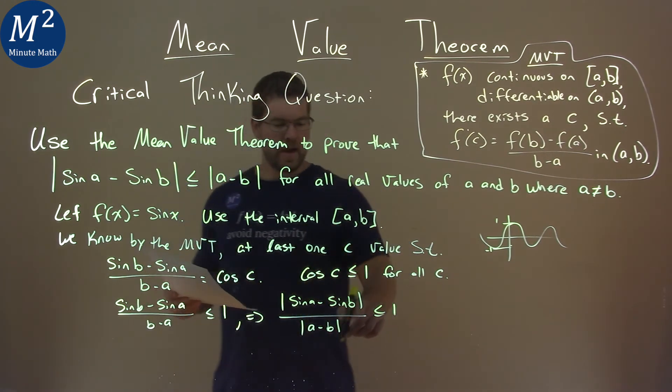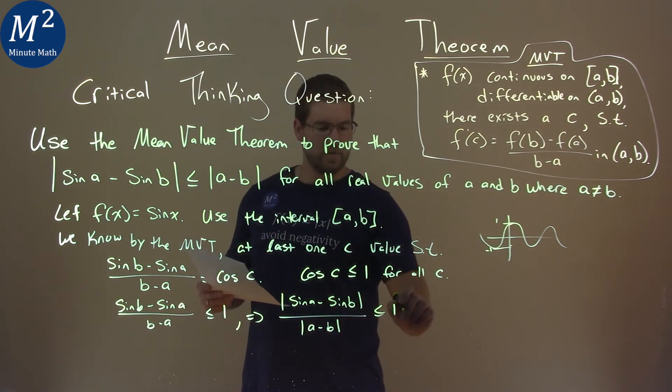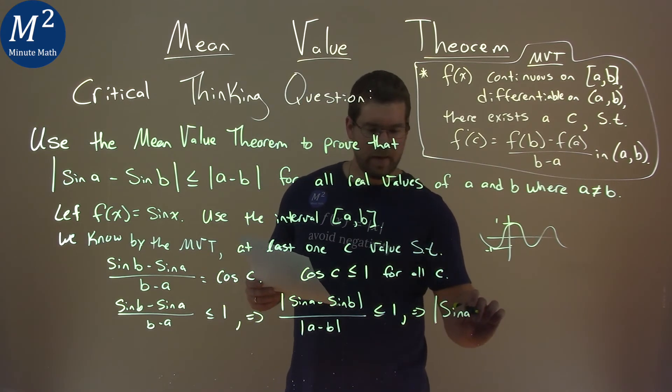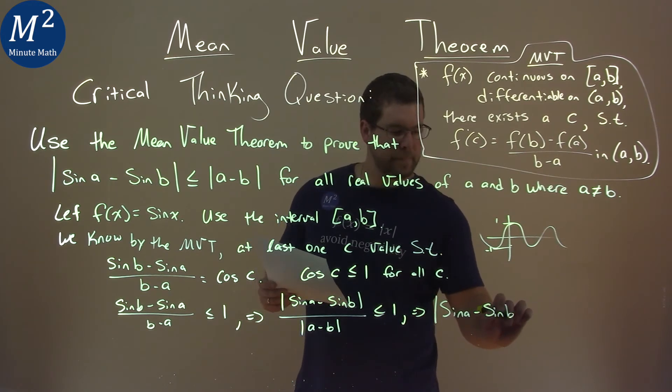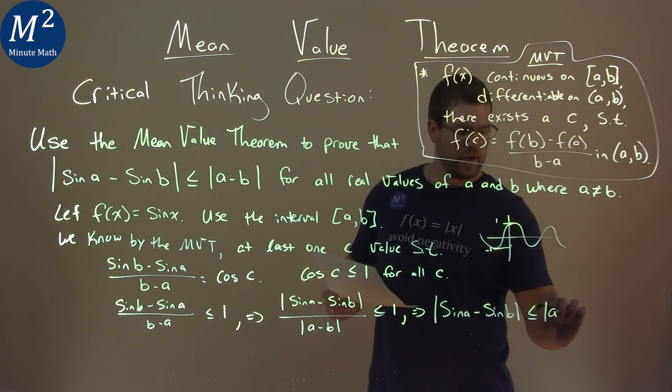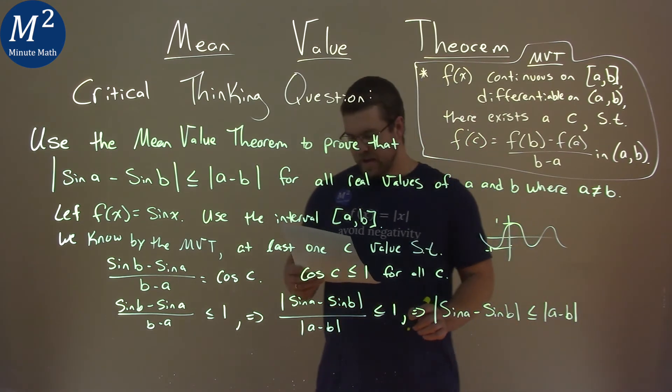And so, if we multiply that A - B to both sides, we have |sin A - sin B| ≤ |A - B|. And there we have it.